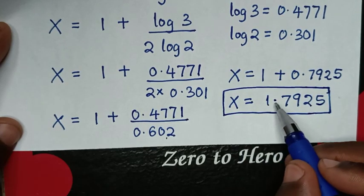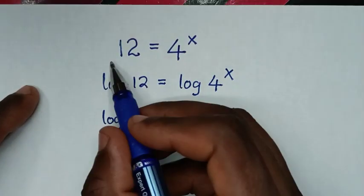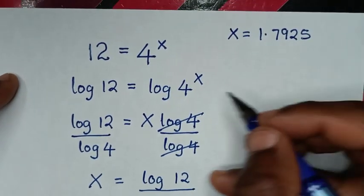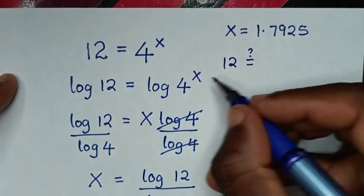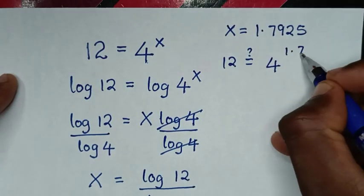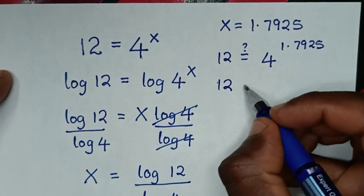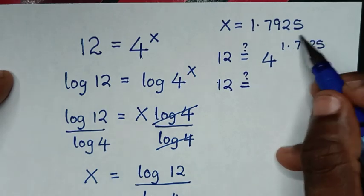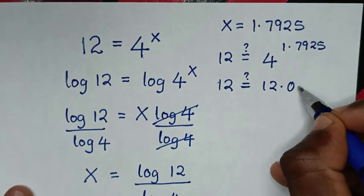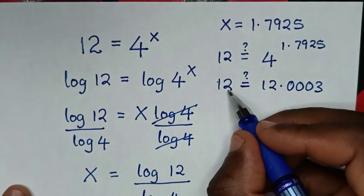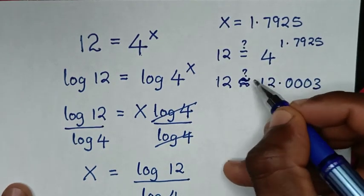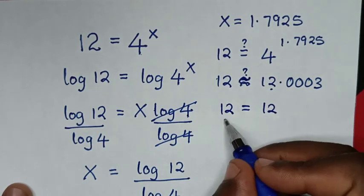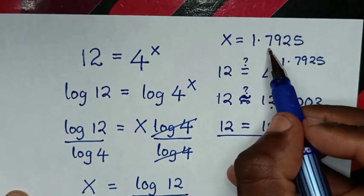Now to check this answer, we substitute x equal to 1.7925 back into the original equation. So we check: is 12 equal to 4 to the power of 1.7925? When we calculate 4 to the power of 1.7925 in the calculator, it gives 12.0003. This 12 and 12.0003 are approximately equal. When we round off to whole numbers, it becomes 12 equals 12. Left side and right side are equal, confirming the value of x is 1.7925.